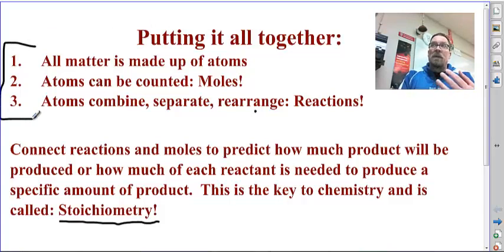Here's what we learned early on. All matter is made up of atoms. We know that. And we know there's 92 naturally occurring elements which are the most basic of the atoms. We know we can count them. We've learned using Avogadro's theories that we can convert from moles to grams and back and forth using the molar mass. So we can count them.